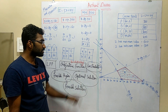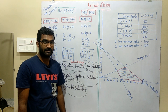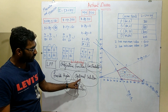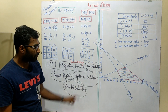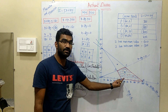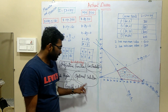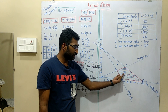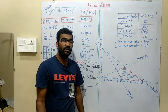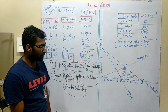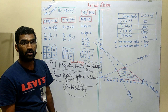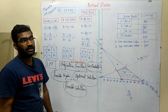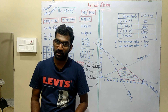Optimal solutions are a set of points that are present in the feasible region and give the maximum and minimum values of the objective function. This covers the important definitions as well as the method for solving a linear programming problem.